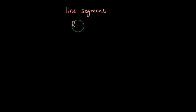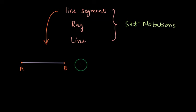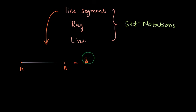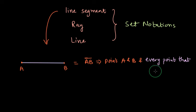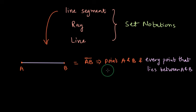Let us see how we can represent line segment, ray, and line in set notation. So let us first take an example of a line segment. Here you see the line segment AB. I can describe the line segment AB as points A and B and every point that lies between A and B. Now this description is going to help us write the set notation.